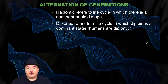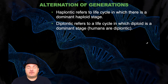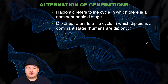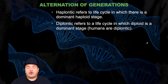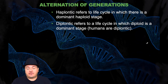Recall from an earlier course that haploid means one of each type of chromosome, and diploid means two of each type of chromosome. Haplontic refers to life cycles in which there is a dominant haploid stage, whereas diplontic refers to life cycles in which diploid is the dominant state. For example, humans are diploid — the only part of the human or mammal life cycle that is haploid is the gametes; everything else is diploid, making it diplontic.